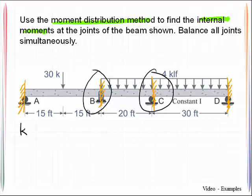Now these are something that I should already know that the stiffness factor at joint B of member BA is equal to 4EI over L and in this case L is 30 feet.